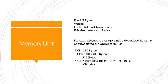A memory unit stores binary information in a group of bits called words. Data input lines provide the information to be stored in the memory. Data output lines carry the information out from the memory. The control lines read and write specify the direction of the transfer of data.